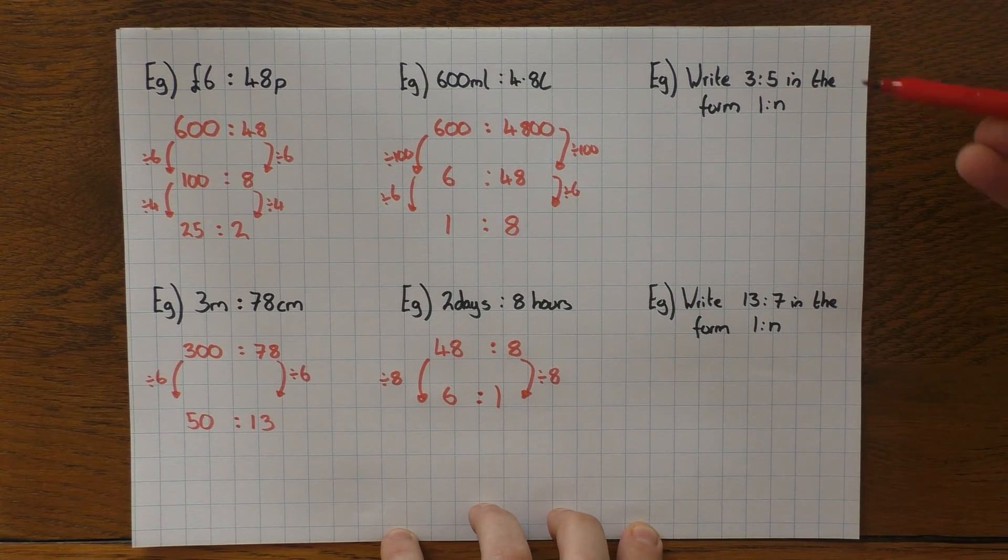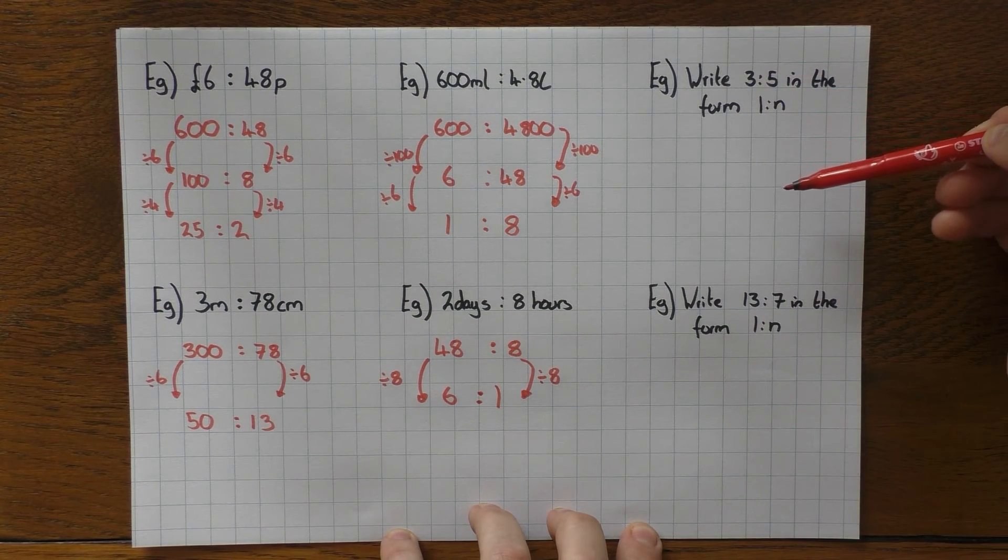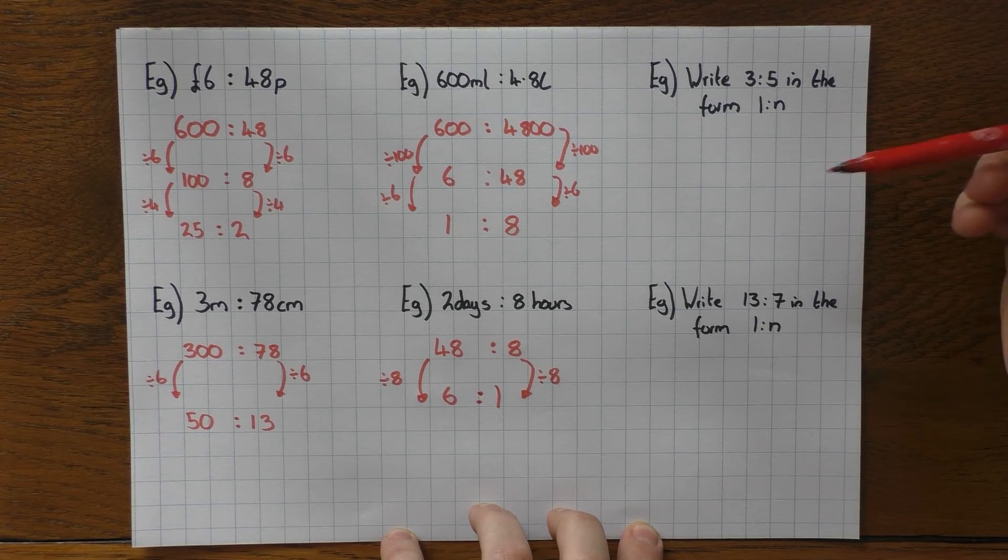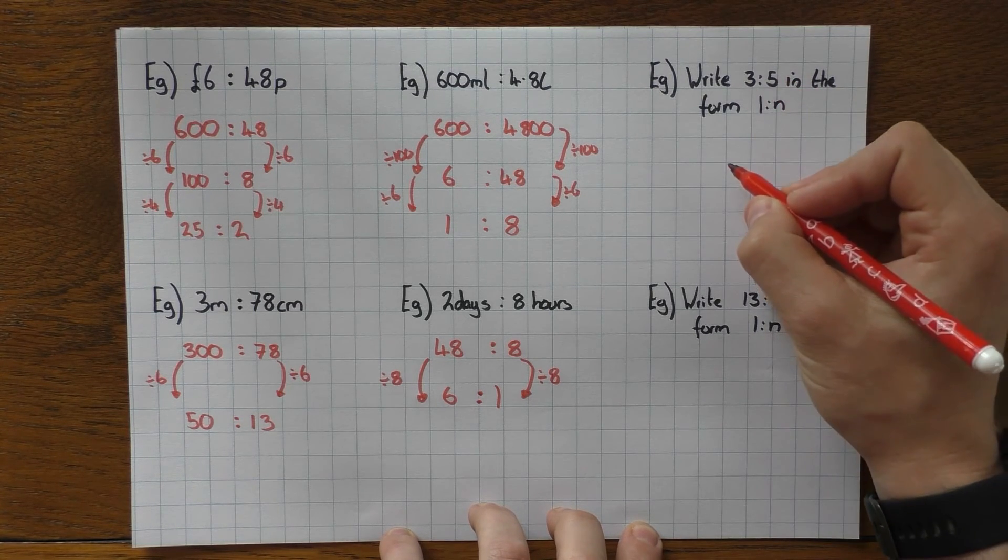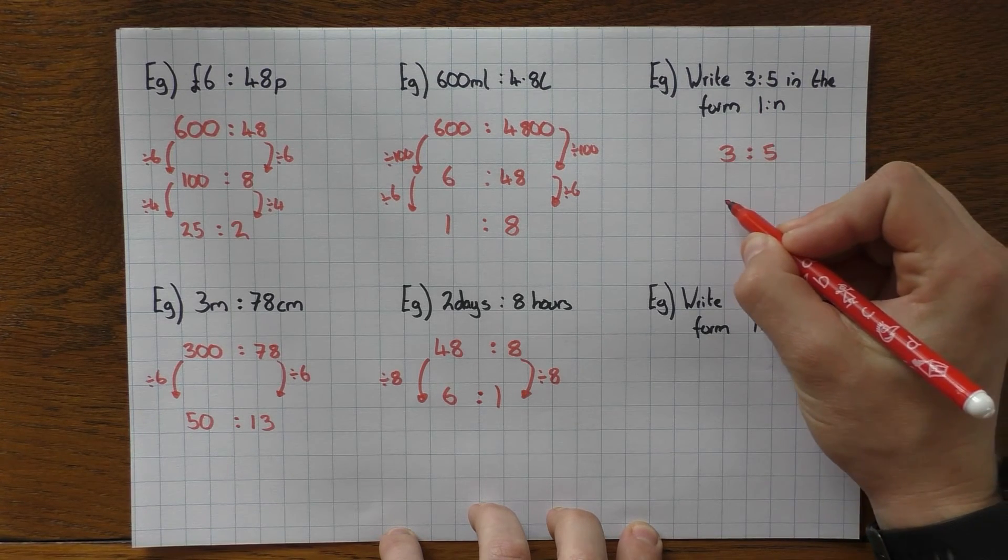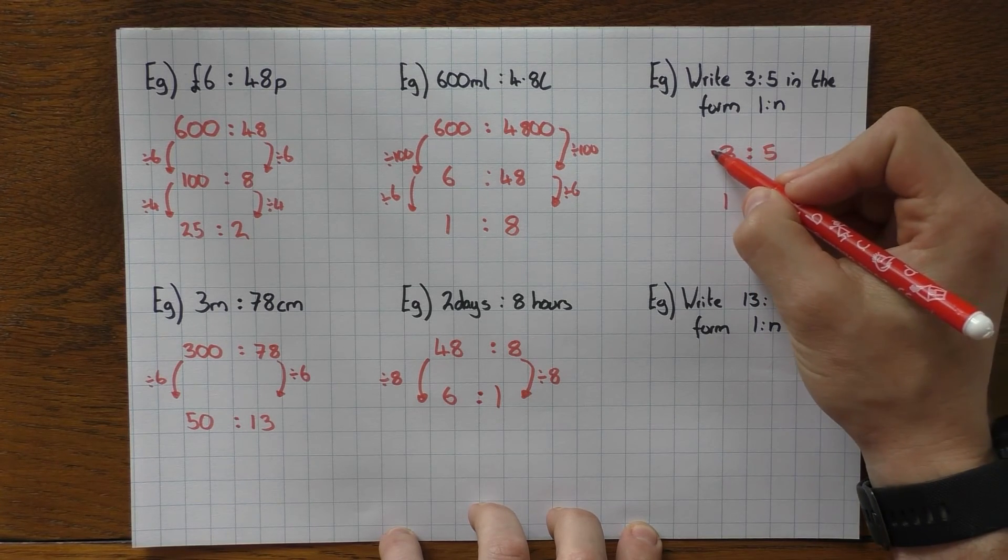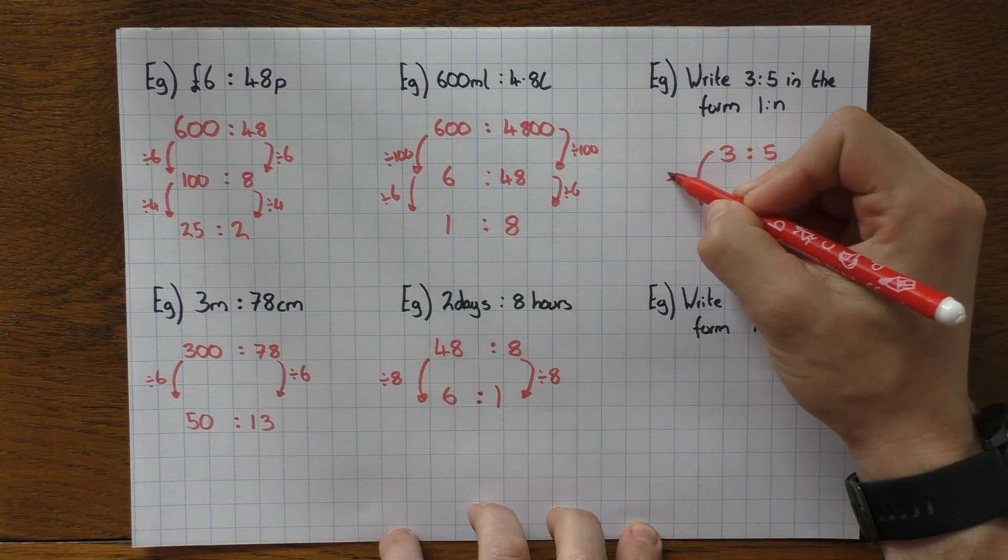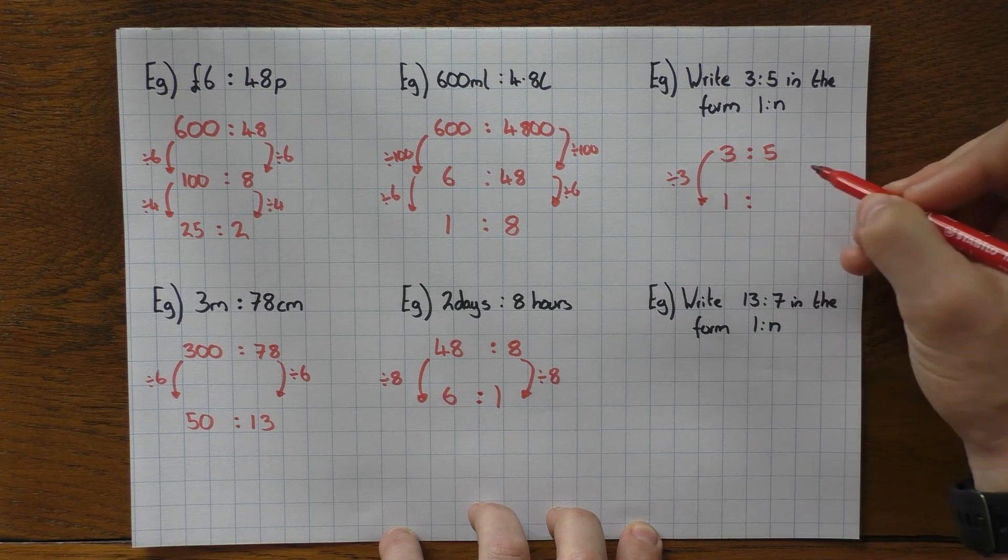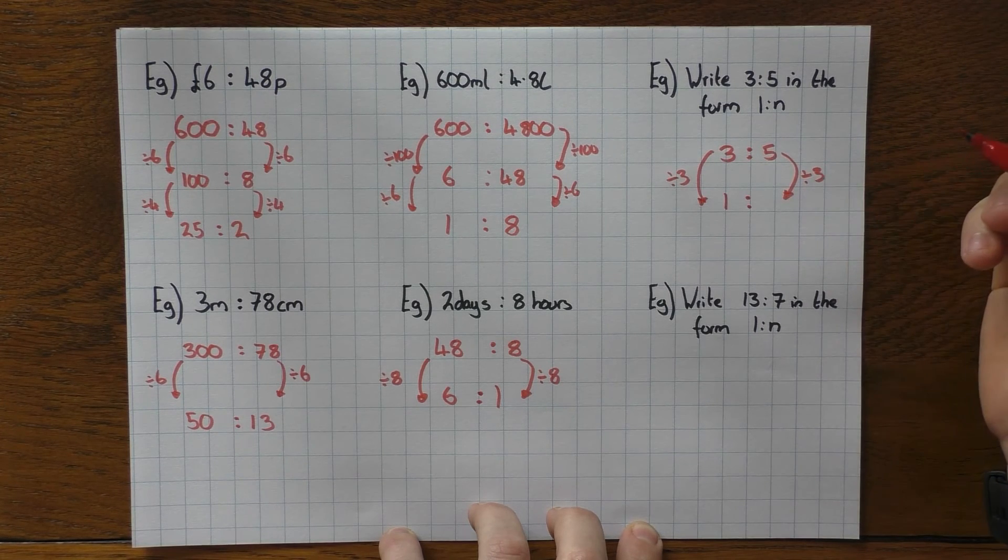And the last little thing to have a look at here is writing a ratio in the form 1 to n. This tends to trip people up in the exams. They tend to think it's more complicated than it actually is. But it's nice and easy. So I've got the ratio 3 to 5. So I'm just going to rewrite that down here. It needs to be in the ratio of 1 to n. You need to work out what n is. Well, how do you go from 3 to 1? Well, I divide it by itself. 3 divided by 3 is 1. Easy peasy. Because I divided that side by 3, I must also divide that side by 3.